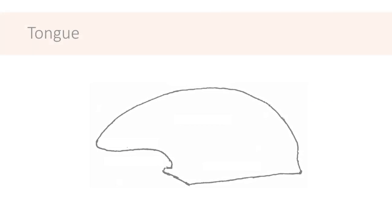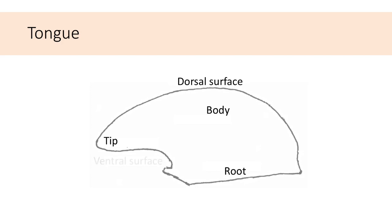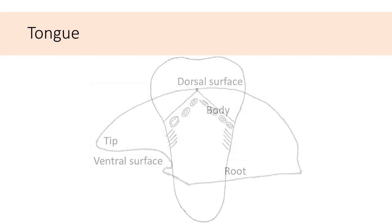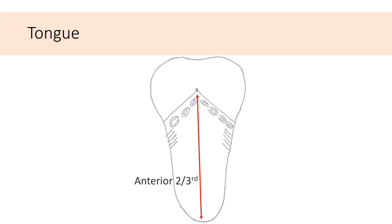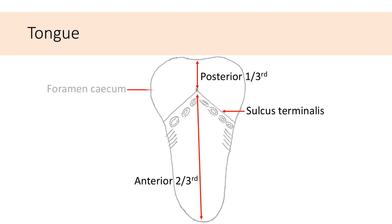The tongue is a muscular organ attached to the floor of the mouth by its root. It has a body and a free tip, with two surfaces: a convex dorsal surface and a ventral surface. On the dorsal surface, the anterior two-thirds and posterior one-third of the tongue are divided by the sulcus terminalis, which is marked by a foramen cecum along the midline. The anterior two-thirds is found in the oral cavity, while the posterior one-third is found in the oropharynx.